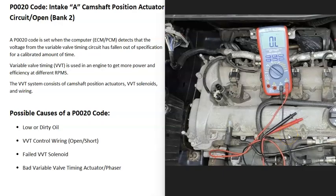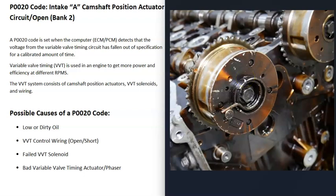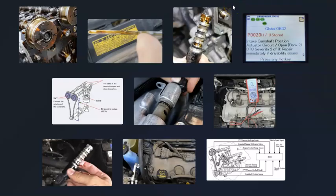If you have a good scan tool there are other ways to test the solenoid as well. The next possible cause is a bad variable valve timing actuator, sometimes called a phaser. This is located on the cam and is what the timing chain or timing belt rides on. If this has issues it can cause problems. You'll need a diagram to understand any wiring going to these actuators for your specific system.